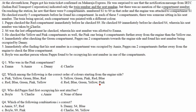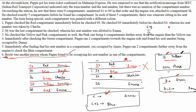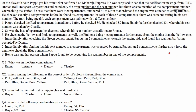Now we can answer all questions. For Question 2 — the correct order of colors starting from the engine side — we already know yellow must appear before pink. Option with pink before yellow is eliminated. The correct color order starting from the engine is: yellow, green, pink, red, blue. Options B matches this sequence, so B is the answer to Question 2.